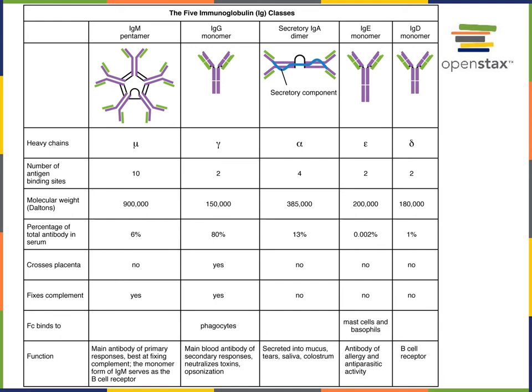Approximately 80 percent of antibodies in blood serum are IgG. IgG is particularly efficient at activating phagocytosis in a mechanism of opsonization, where phagocytic cells have FC receptors that bind to the constant region of the IgG antibody.